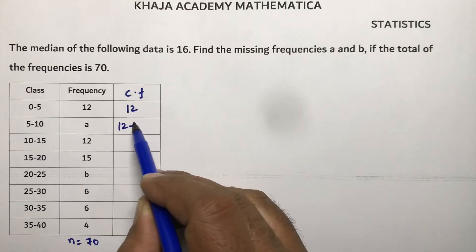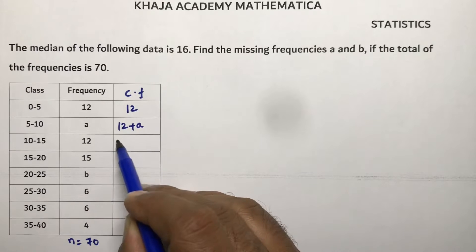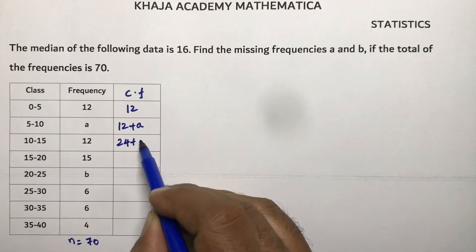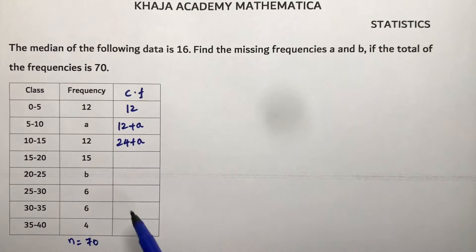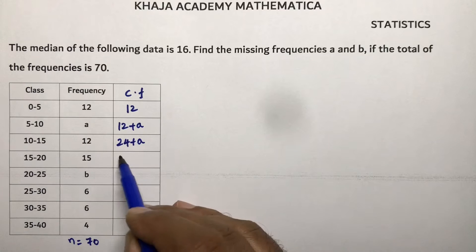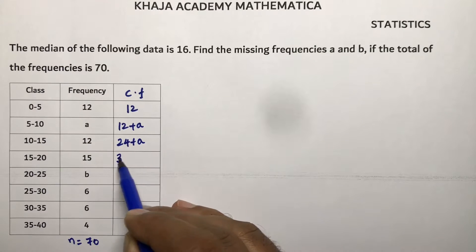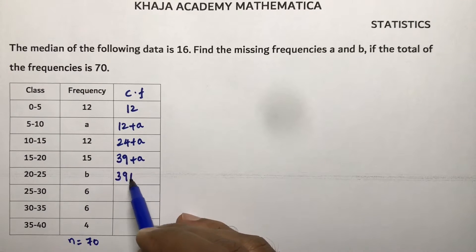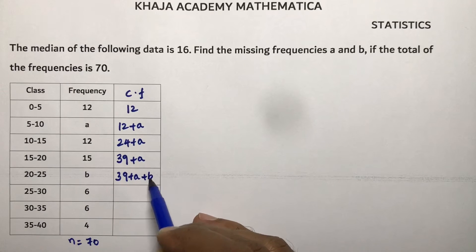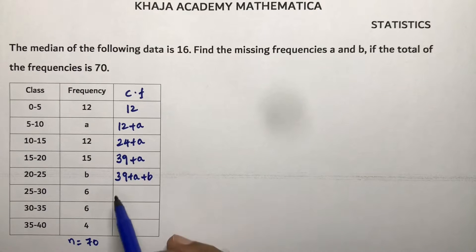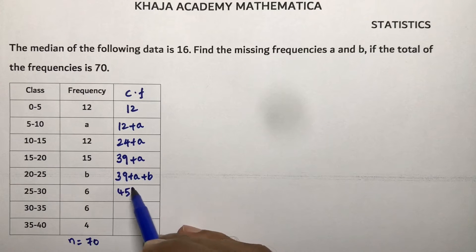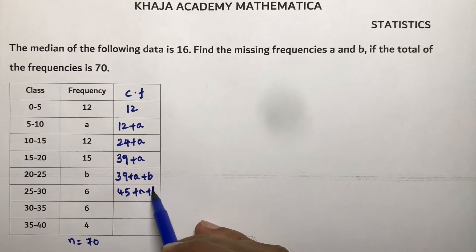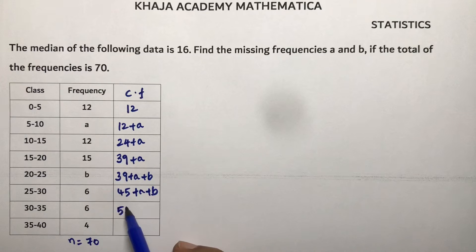Next 24 plus 15, that is 39 plus a. So 39 plus a plus b.